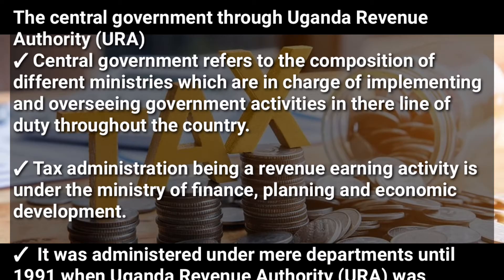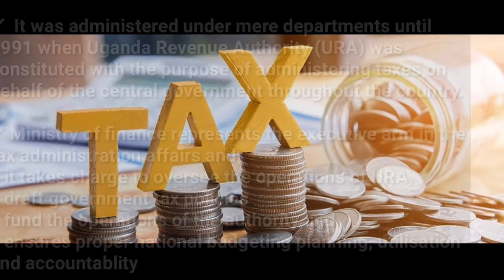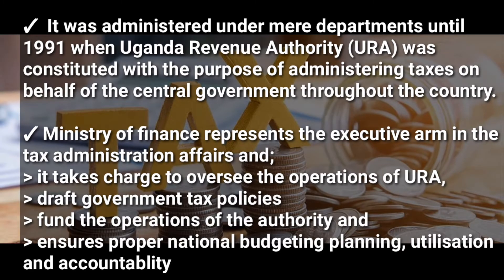Tax administration was administered under mere departments until 1991, when the Uganda Revenue Authority was constituted with the purpose of administering taxes on behalf of the central government throughout the country. The Ministry of Finance represents the executive arm in tax administration affairs, and its responsibilities include overseeing the operation of URA, drafting government tax policies, funding the operation of the authority, and ensuring proper national budgeting, planning, utilization, and accountability.